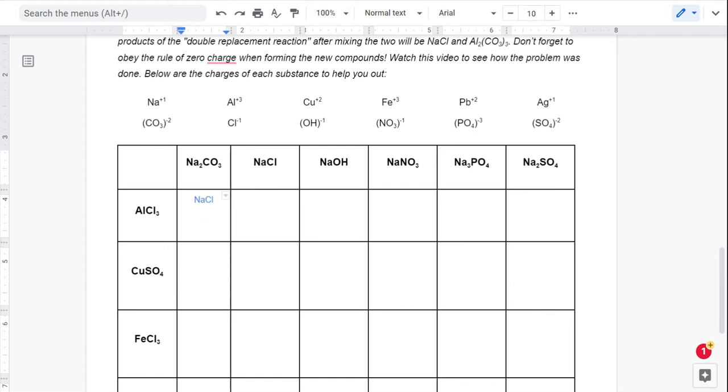Both of those charges go into six. So I need to make sure that I get a positive six from the aluminum and a negative six from the carbonate. That means that I need two aluminums and I need three carbonates. And that's going to be my formula there.